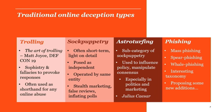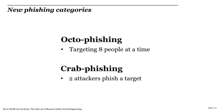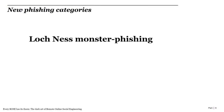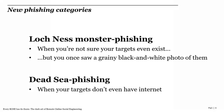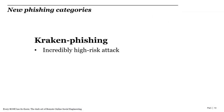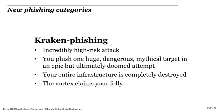My bachelor's degree was in English language and literature, and I'm still really interested in linguistics. I have a weakness for bad puns, so I'm proposing some new additions to the phishing taxonomy. Octofishing: targeting eight people at a time. Crab fishing: two attackers fishing one target simultaneously — a pincer movement. Loch Ness monster fishing: you don't even know your targets exist. Dead sea fishing: your targets don't have internet access. And kraken fishing: a very high-risk strategy targeting one huge mythical target in a doomed attempt, where your entire fishing infrastructure is destroyed.